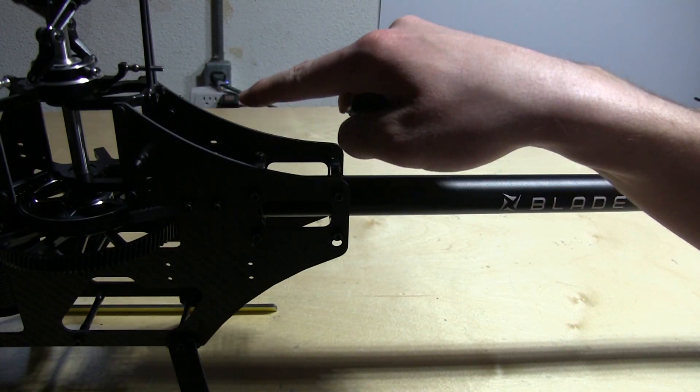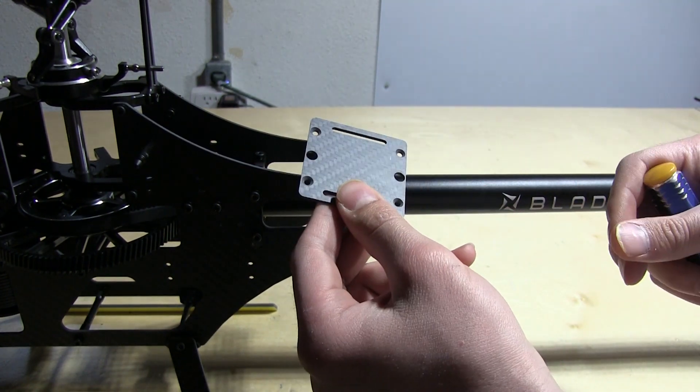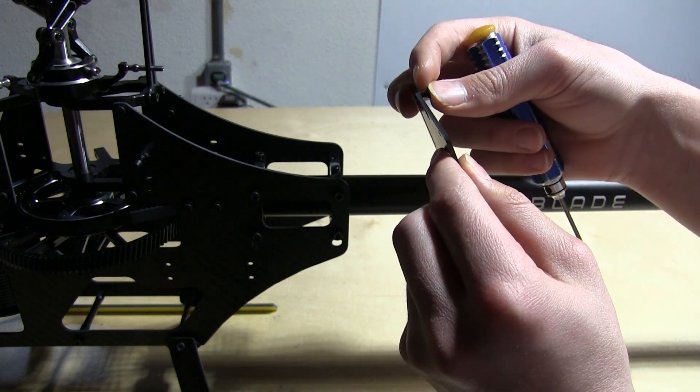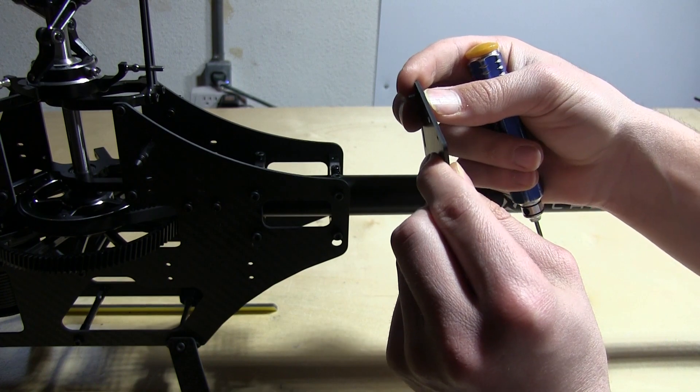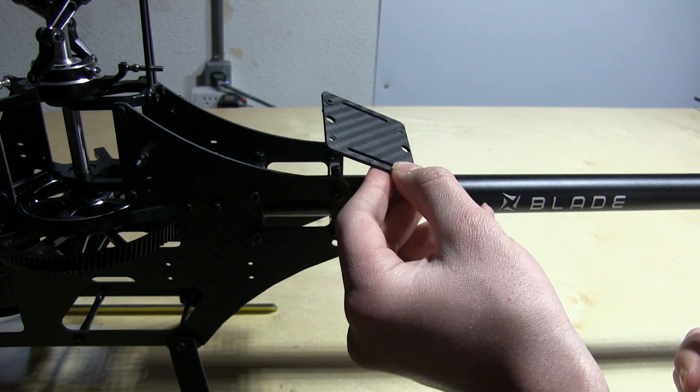Now that the tail boom is mounted to the mainframe, we can install the flybarless unit mount. You can see there is a top and a bottom. The way to tell is the indents on the top of the plate. As you can see, it fits up with the screw like so. It's four screws in total, so let's get this out of the way.